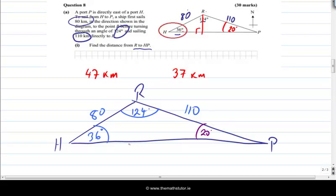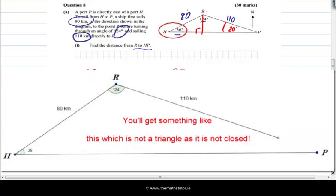Certain combinations of side lengths and angles are possible and certain combinations are not possible. If you tried to sketch this out using a scale diagram - say 80 kilometers, let's make that 80 millimeters, 110 kilometers, let's make that 110 millimeters, use your protractor and put in 36 degrees and 124 degrees - you just won't get a triangle. It's impossible to make a triangle with these dimensions. We're going to use a little online triangle solver to show that as well.